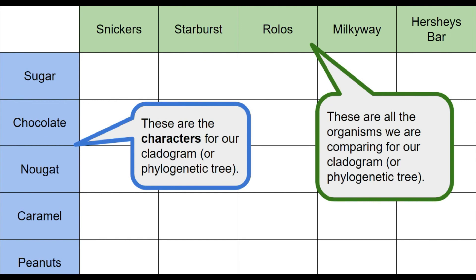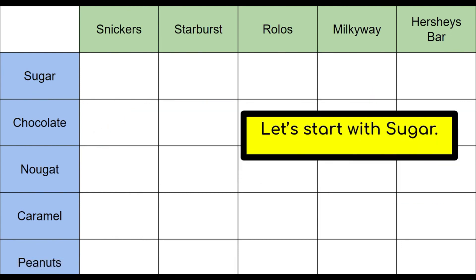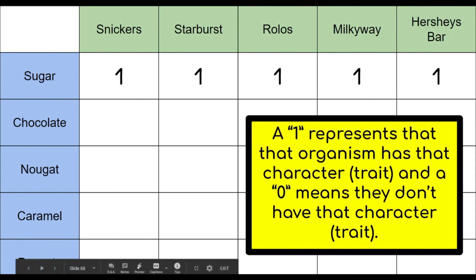When building your data table for your tree, on the left-hand side you have the characters, and at the top of the table are your organisms — all the organisms we are comparing for our cladogram or phylogenetic tree. Characters and traits are used interchangeably. We'll start with sugar. When filling in the data table, we use 1 to represent that the organism has that trait or character, and 0 means they don't. Every single one of these organisms has sugar, so they all get a 1.